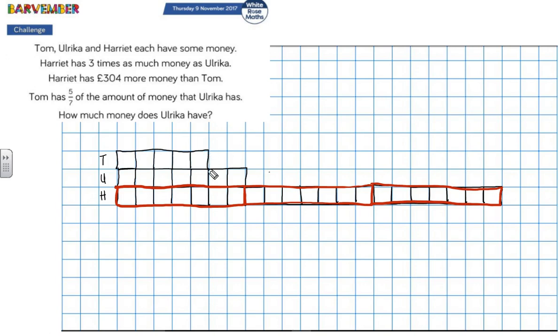Now, how much has Tom got? Tom has up to here. This is where, had you put Tom's here, I suppose that might have been easier to see. But this is how much Tom has. I'm going to draw a line all the way down there. So, this is the same as Tom. This is what Harriet has that's more than Tom. So, I now know that this is worth £304.